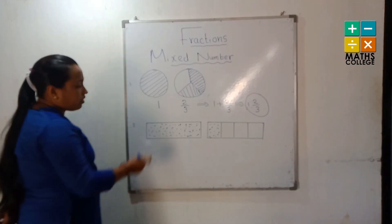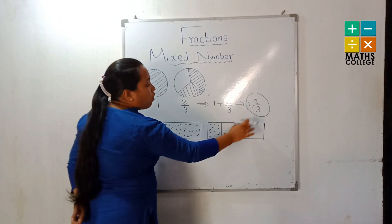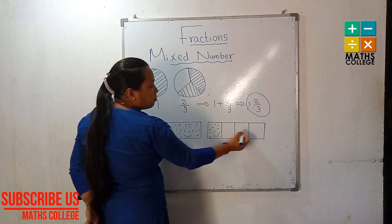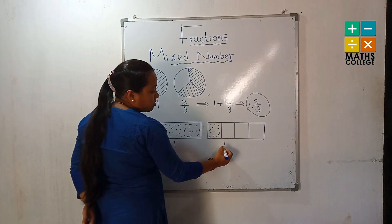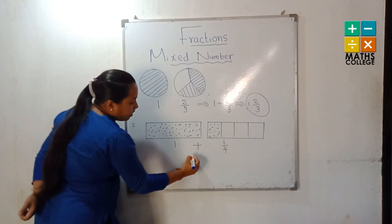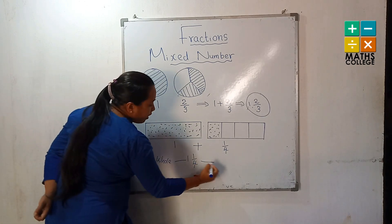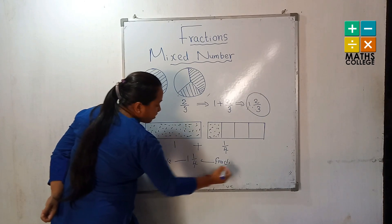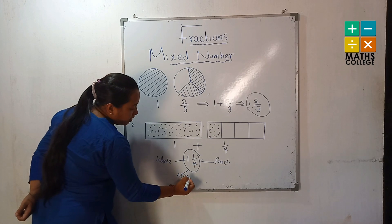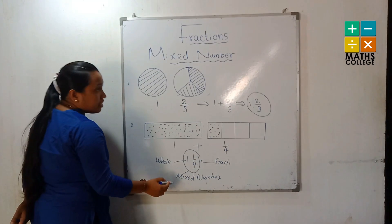Let's go through a second example. It's a rectangular shape. The second rectangle, the same size, is divided into four equal parts with one part colored. So we have one full rectangle, and the other divided into four parts — written as 1 upon 4. So, 1 and 1 upon 4: the whole number and the fraction. Joining a whole number and a fraction creates the mixed number.